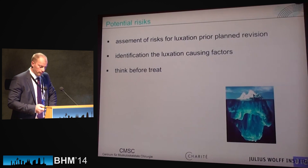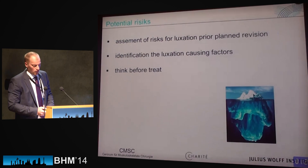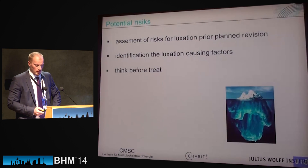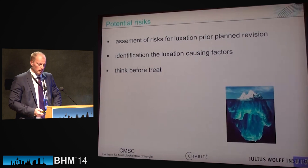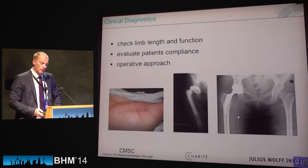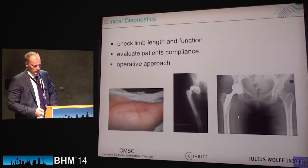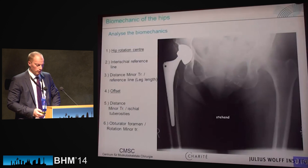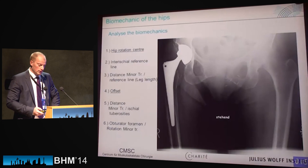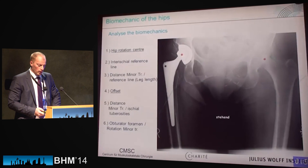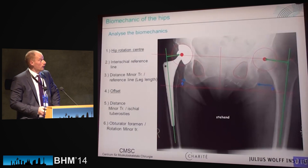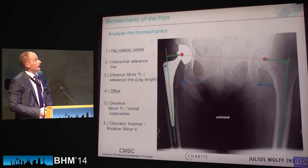Before we treat a patient, we have to correctly assess the risk for luxation. Prior to planning the revision, we have to identify the luxation-causing factors. We have to think before we treat — check clinically for limb length and hip function, evaluate patient compliance, and think about the approach. It's necessary to analyze the biomechanics on X-rays, looking for the correct hip center, the offset, and the inclination.